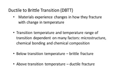Materials experience changes in how they fracture as the temperature changes. There exists a transition temperature where below this temperature, materials will experience brittle fracture, and above it, ductile fracture. This transition temperature range is dependent on many things, such as microstructure, chemical bonding, and chemical composition.